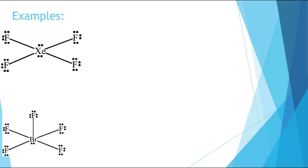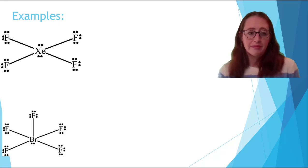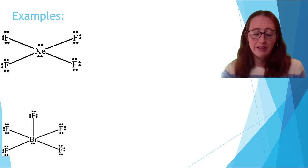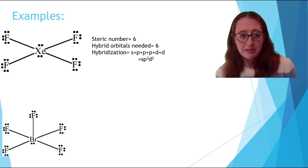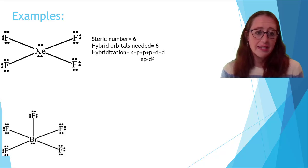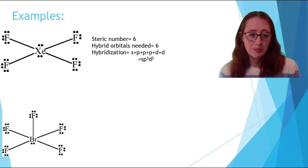Let's do some more examples. Try these on your own and come back when you're ready, and then we'll do them together. Let's start with the first one. So here we have two lone pairs and four bonded atoms, which gives us a steric number of six. This means that we need six hybrid orbitals and gives us a hybridization of SP3D2. So we get one S, three Ps, and two Ds, and that gives us our octahedral geometry.